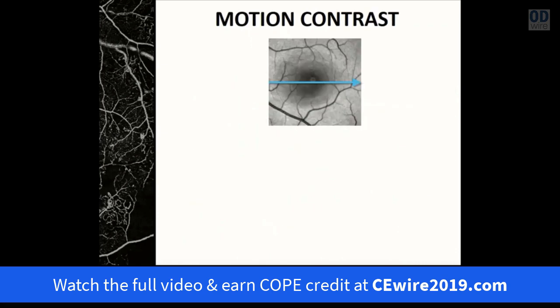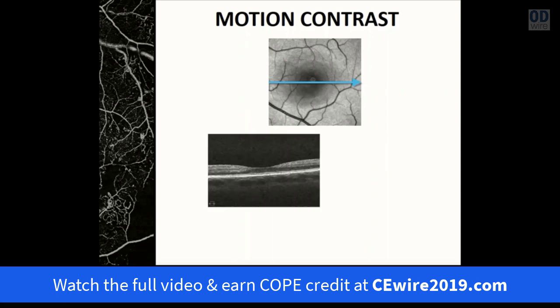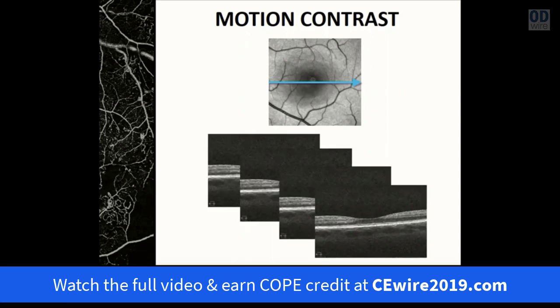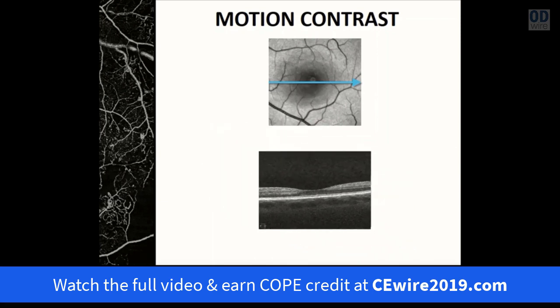The hardware of OCT angiography technology is nearly identical to that used to acquire a traditional macular cube scan, except it's performed four times consecutively. Those four scans are then compared, and any differences are assumed to be due to movement of red blood cells — essentially generating a 3D volumetric map of red blood cell movement. Similar to how a fluorescein angiography camera only captures dye fluorescence, OCT angiography only captures movement.